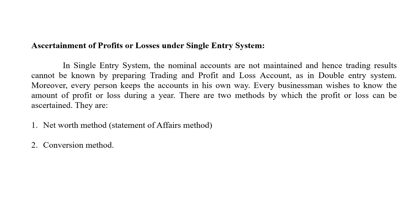The first method is the net worth method, where we prepare a statement of affairs to identify profit and loss. The second method is the conversion method, where we convert the single entry system of accounts into the double entry system of accounting, and then prepare a trading and profit and loss account to find out the profit or loss of the business. The conversion method procedures will be covered in the next class.